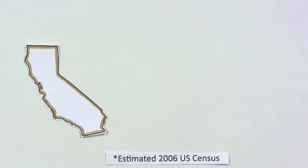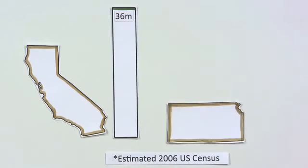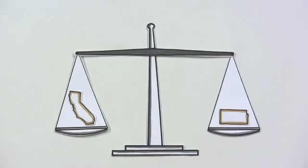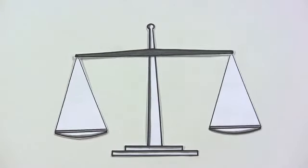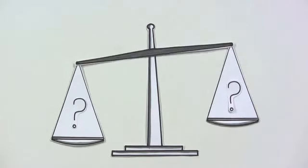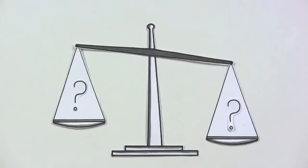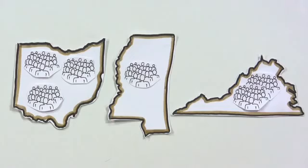Consider this: California has about 36 million people, while Kansas has less than 3 million. We need a way for California's choice to have more influence on the election because the state has more people. The question becomes: how do we make sure each state has the right amount of influence on the election? We need a way to account for the population of each state.